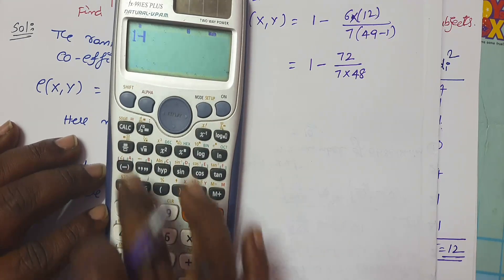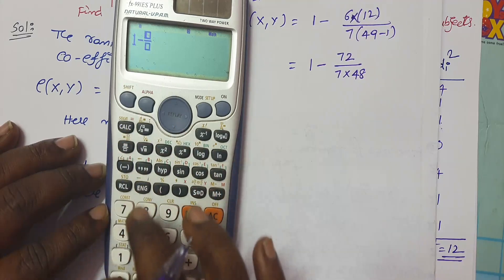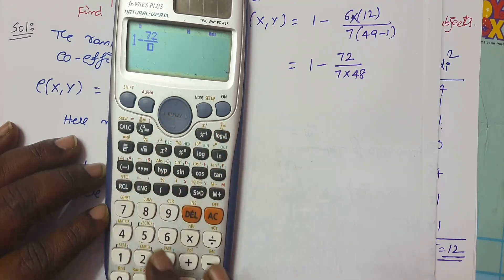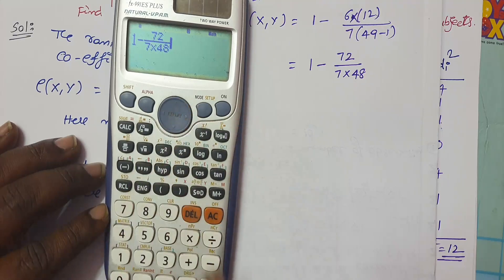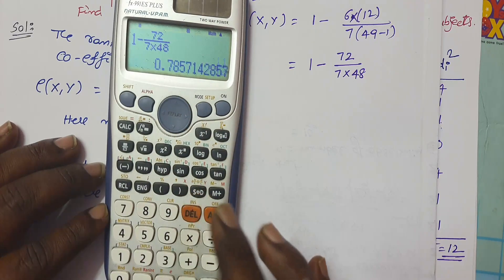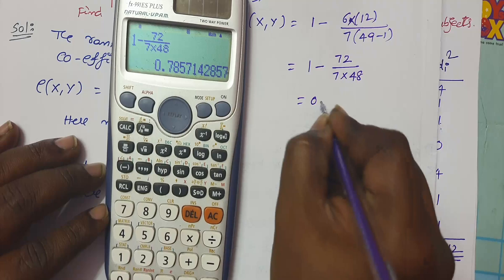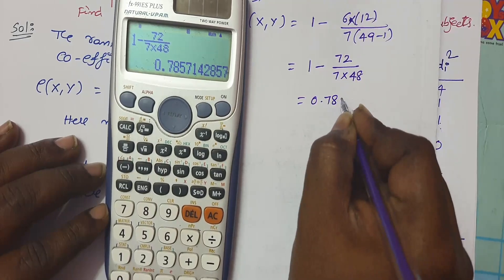1 minus this one, 72 division 7 times of 48. I got 0.7857.